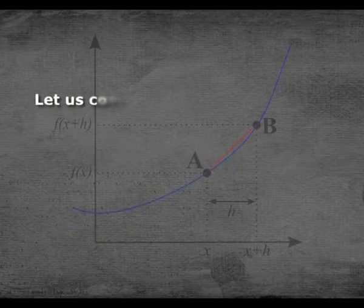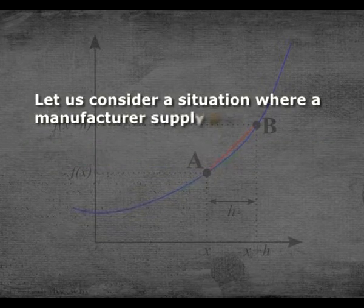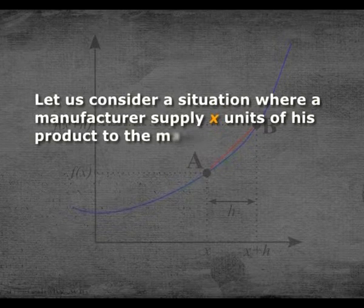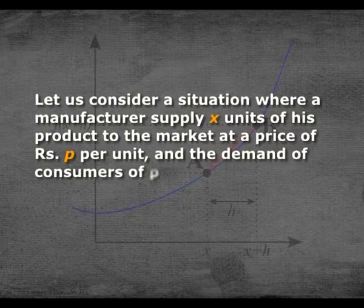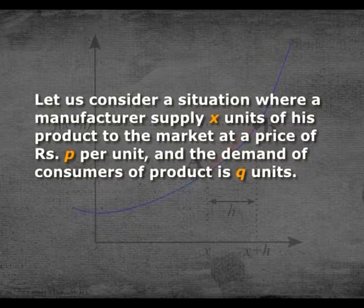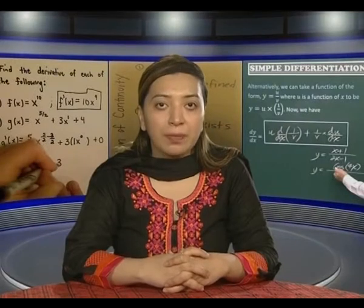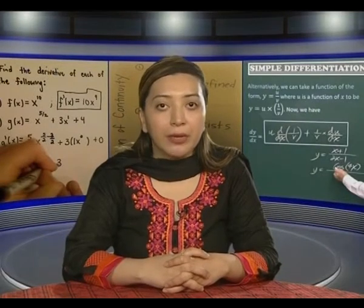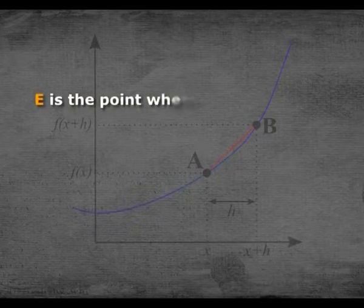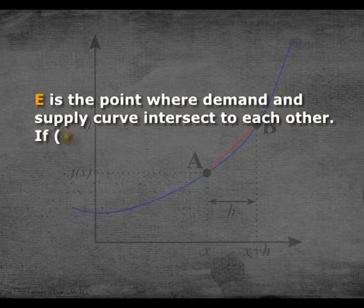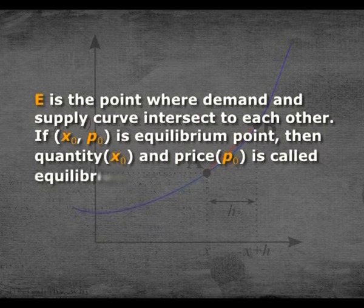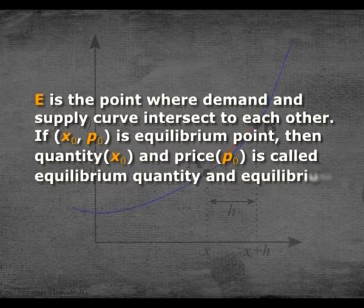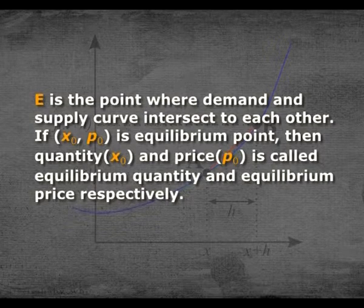Let us consider a situation where a manufacturer supplies X units of his product to the market at a price of rupees P per unit and the demand of consumers of the product is Q units. When supply equals demand at this price, the market is in equilibrium. E is the point where the demand and supply curves intersect. If X naught and P naught is the equilibrium point, then quantity X naught and price P naught are called the equilibrium quantity and equilibrium price respectively.